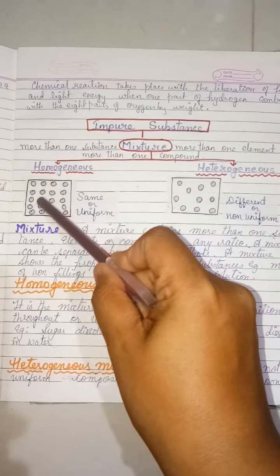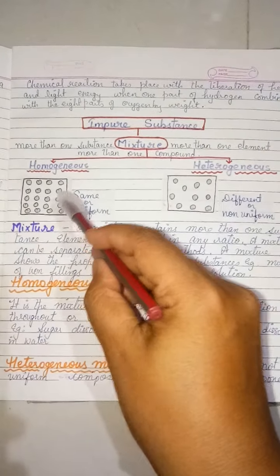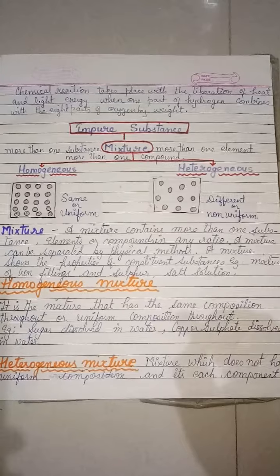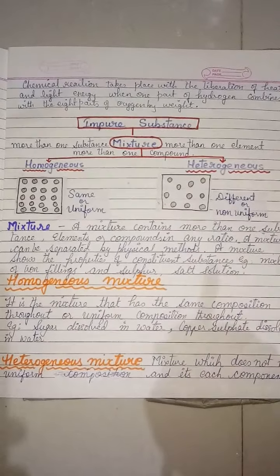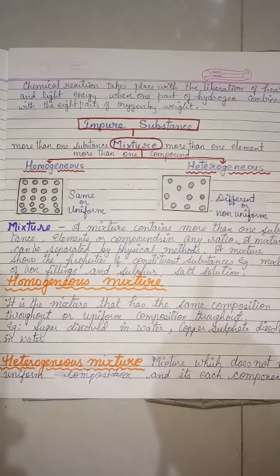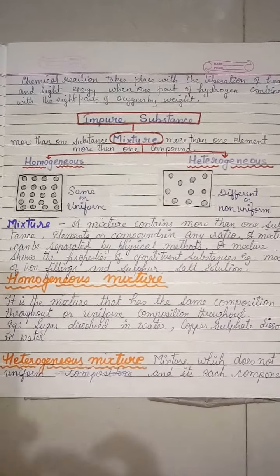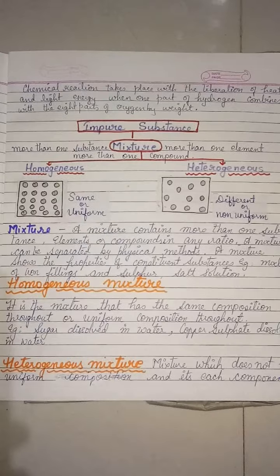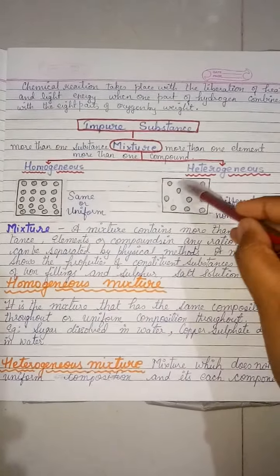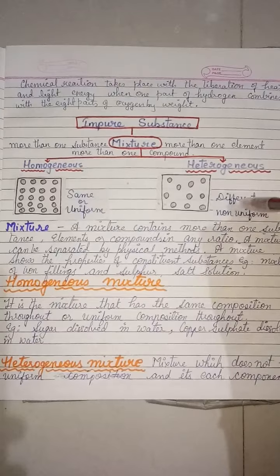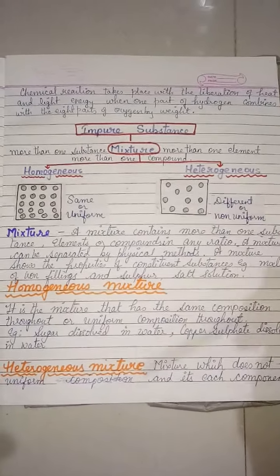In homogeneous mixtures, the composition is the same throughout. For example, if you take a sugar and water solution, you will find that throughout the water the sweetness is the same. But in case of heterogeneous mixtures, it has a non-uniform or different composition.